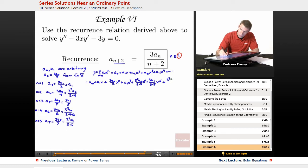Plus 3 cubed A0 over 2 times 4 times 6 X to the 6th, plus 3 squared A1, 3 times 5 times 7, X to the 7th, and so on.